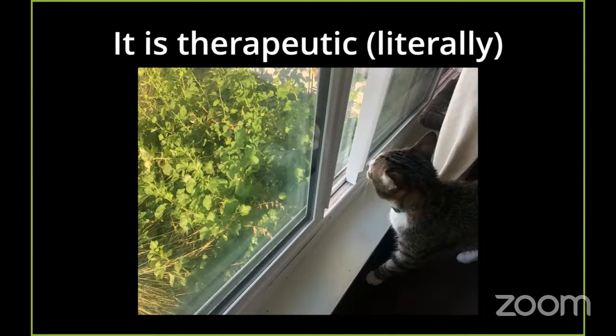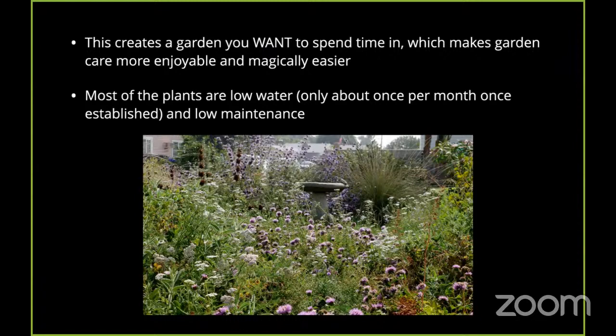If you have cats, it gives them something to look at. We have four rescue cats at my house, but they stay inside because we are not going to let them outside where all of this great habitat is — cats are just built predators and they kill lots of birds. So they stay inside, but they enjoy looking out and seeing all the action going on. All of this collectively creates a garden that you want to spend time in, which makes garden care more enjoyable and almost magically a little bit easier versus pushing a lawnmower every weekend. In Southern California, most of the garden maintenance happens seasonally in spring and fall.